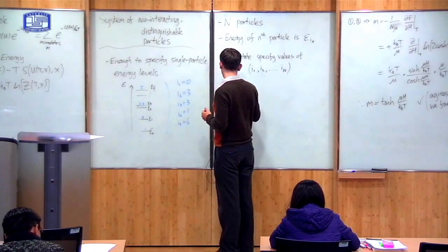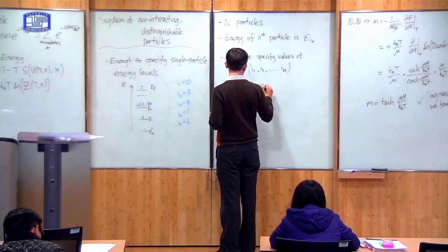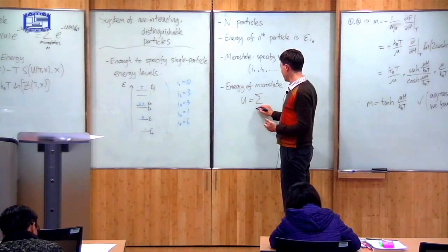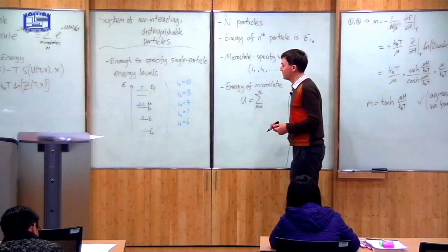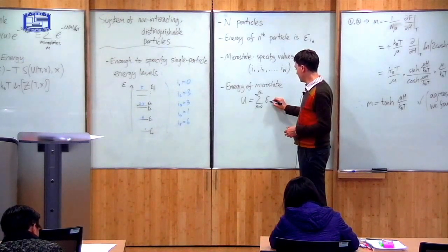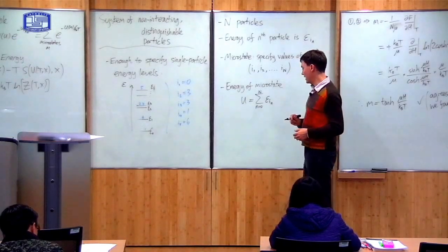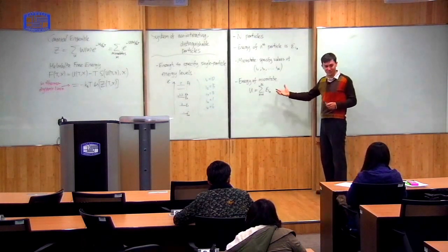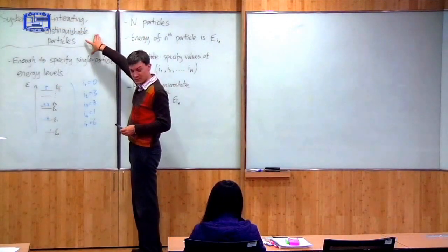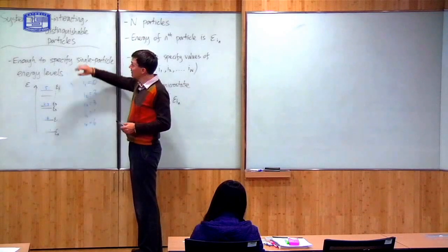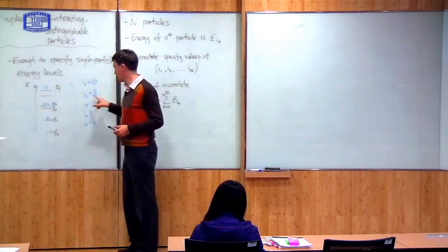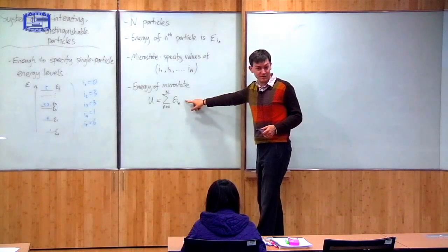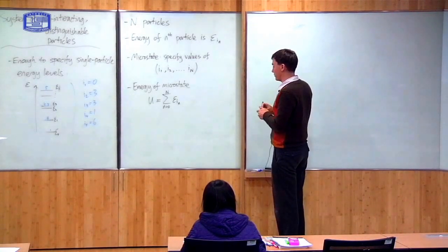What's the energy of the microstate? It's just the sum of the individual particle energies. I have a sum where n goes from zero to big N of the energy of each particle, which is just epsilon i_n. I've described a system of non-interacting distinguishable particles: non-interacting means I can label the energies individually, distinguishable means I can say the first particle is here and the second particle is there. Therefore, the microstate is given by a vector, and the energy by this sum. Now we are in a position to calculate the canonical partition function.